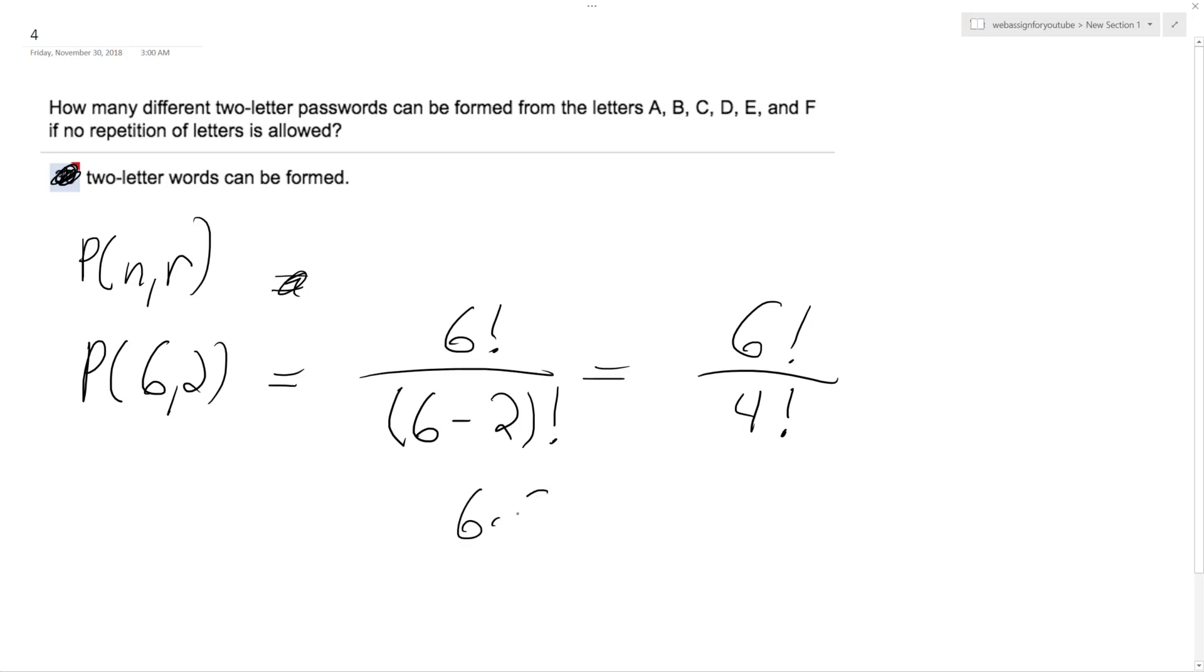So this ends up being 6 times 5 times 4 times 3 times 2 times 1 over 4 times 3 times 2 times 1. Cancel these out, and we're left with 6 times 5, which equals 30.